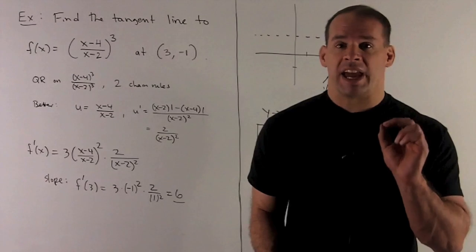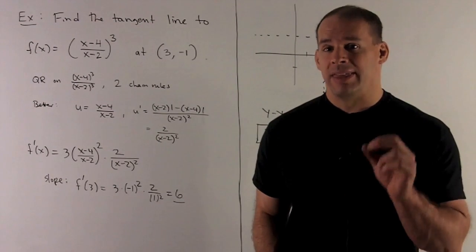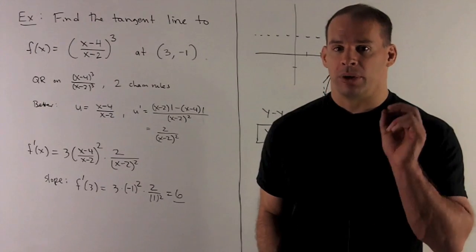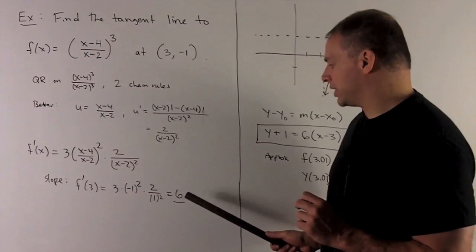If I want the slope of the tangent line at our point, 3 comma minus 1, we put 3 into that. That gives us our slope. I put a 3 in there. What's going to come out? We unwind everything. It's just going to be 6.